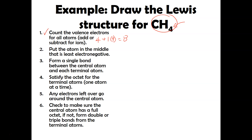Step two is to put the atom in the middle that is least electronegative. Hydrogen is only satisfied with two electrons, so hydrogen is always going on the outside. That makes carbon go in the middle. So we've got carbon in the center with hydrogen, hydrogen, hydrogen, and hydrogen around it.